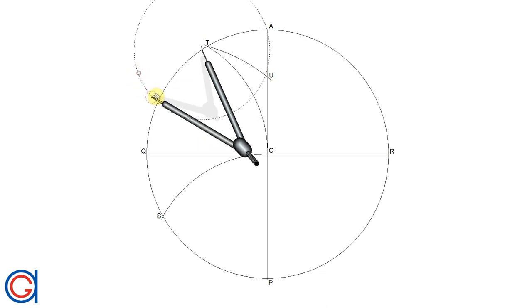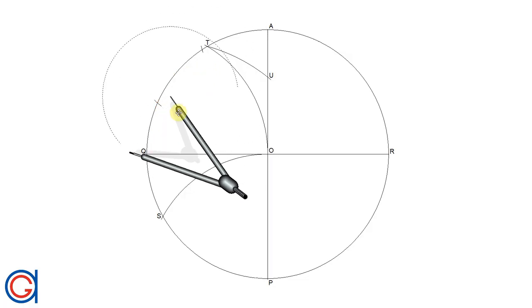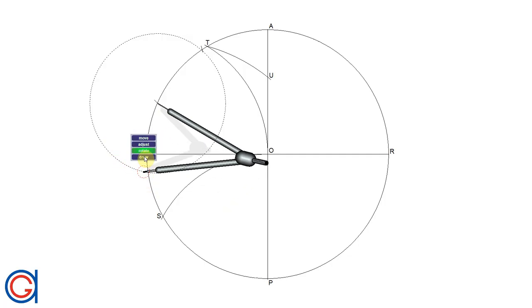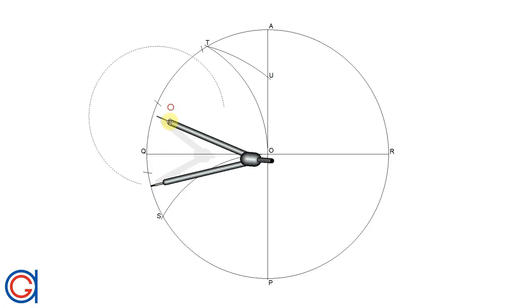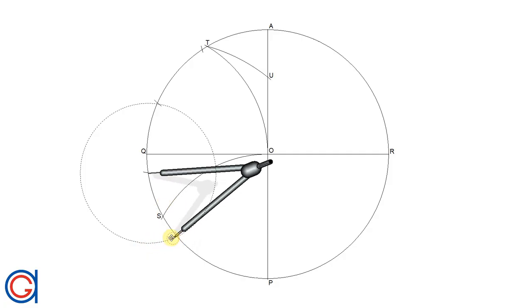Vertex B, and in continuation, now setting the compass on vertex B, we scribe our next arc to get vertex C, and now again vertex D.